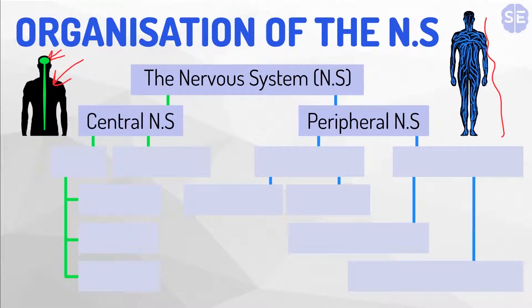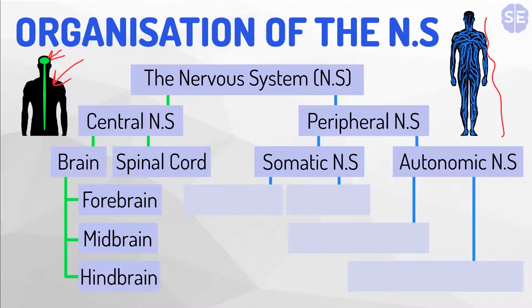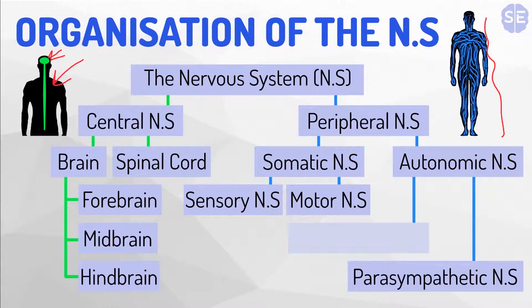The central nervous system can be split into the brain and the spinal cord, and the brain contains the divisions of the forebrain, the midbrain, and the hindbrain. On the other hand, the peripheral nervous system contains the somatic nervous system and the autonomic nervous system. The somatic nervous system contains the sensory nervous system and motor nervous system, while the autonomic nervous system contains the parasympathetic nervous system and sympathetic nervous system.